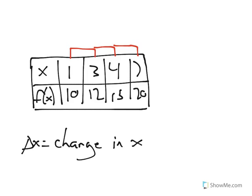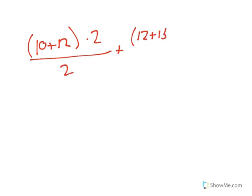And how we're going to do this, that's going to be our change in X, and this is going to be our X1, X2, X3, and X4. So what that comes out to be is 10 plus 12, that's X1 plus X2, times by 2 over 2, plus 12 plus 15 times by 1 over 2.